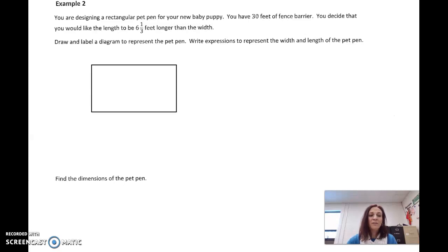We know we have 30 feet total, and we want the length to be six and a third feet longer than the width. So it really doesn't matter what you make the width or the length, but if I say this is the width, then it's a rectangle, so the other side has to be the same. And if we want it to be six and a third feet longer, I'm going to take whatever the width is and I'm going to add six and a third feet to it. And of course, the other side has to be the same. So getting this visual here kind of helps us see what our dimensions are. Now, we need to write expressions to represent the width and length.